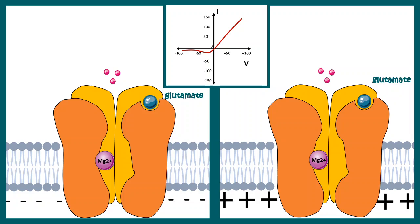Understanding this graph biologically: when the membrane is still negative, it cannot repel the magnesium ion — instead it is attracting the magnesium ion — and that is why cations cannot enter the post-synapse. As the membrane potential gradually becomes positive, it repels the magnesium ion, and thereby cations can get inside the post-synapse. This is how we can explain the IV curve of the NMDA receptor.